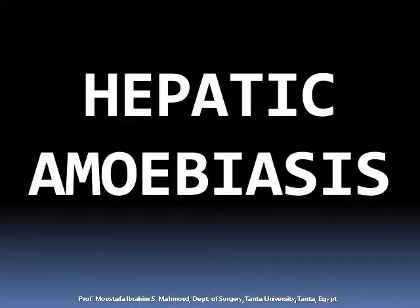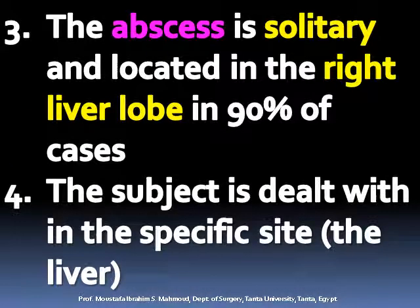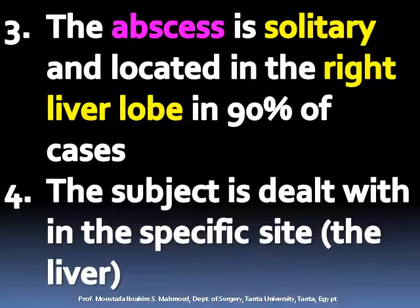Hepatic amoebiasis: amoeba reaches the liver through the portal vein, with abscess formation in 10% of cases of amoebic dysentery. The abscess is typically solitary and located in the right liver lobe in 90% of cases.